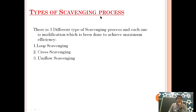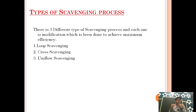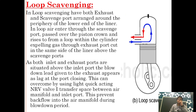What are the types of scavenging process? There are three different types of scavenging process, and each one is a modification done to achieve maximum efficiency. There are three methods: loop scavenging, cross scavenging, and uniflow scavenging. All three methods represent developments that took place one by one over a period of time in a diesel engine, showing how modifications in the scavenging process have been done to enhance the mechanical efficiency of an engine.